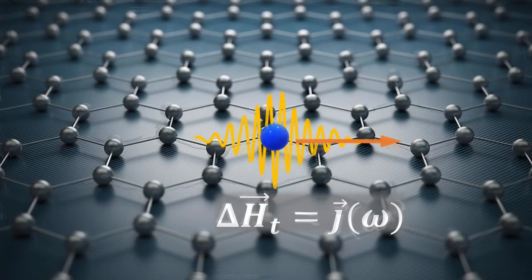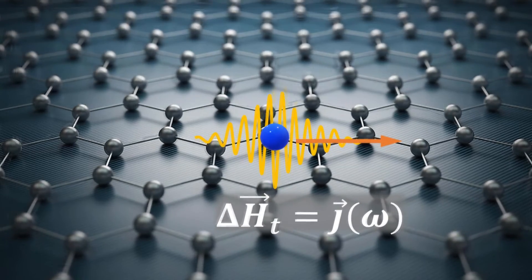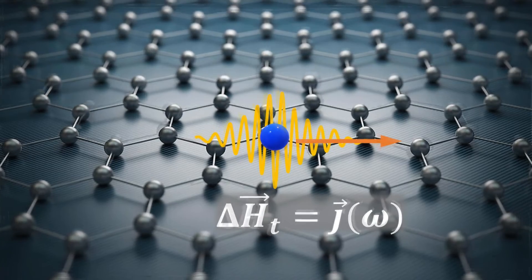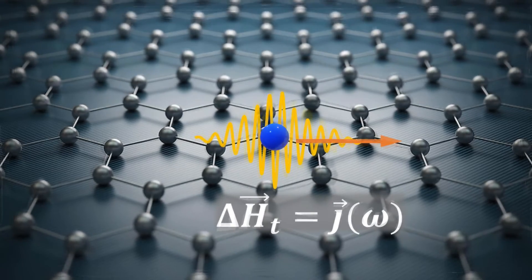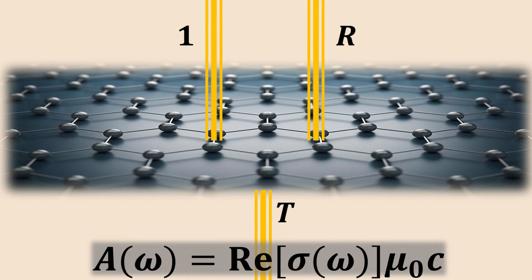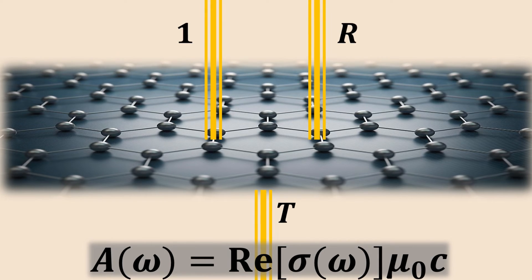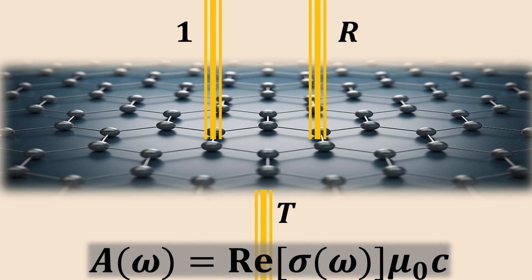The electric surface currents would then produce a jump in the tangential component of the magnetic field, thus affecting the electromagnetic wave scattering across the 2D graphene sheet. The surface electric current therefore enters the boundary condition for the Maxwell equation, leading to scattering of the incident light, with finite reflectance and transmittance.